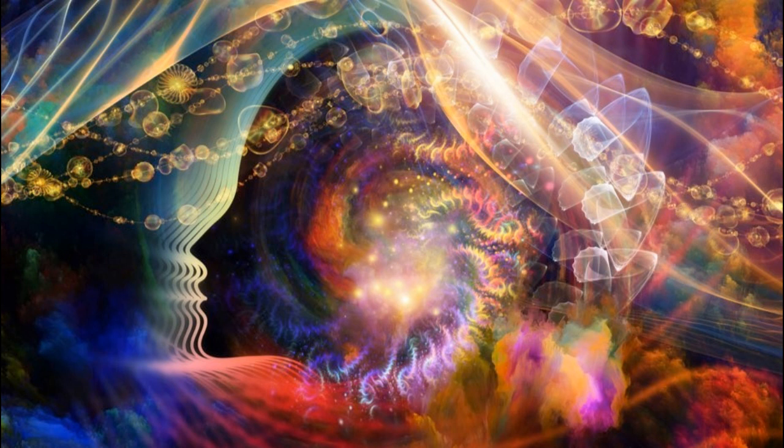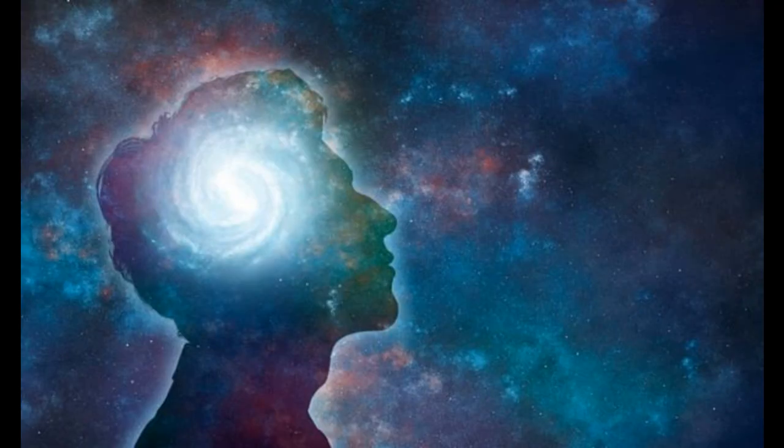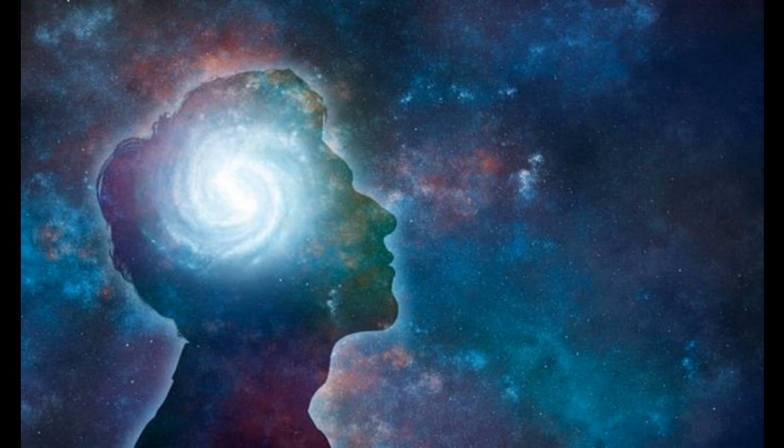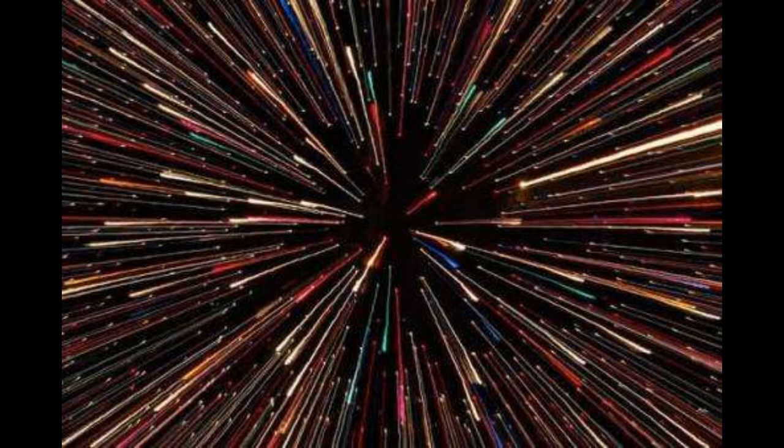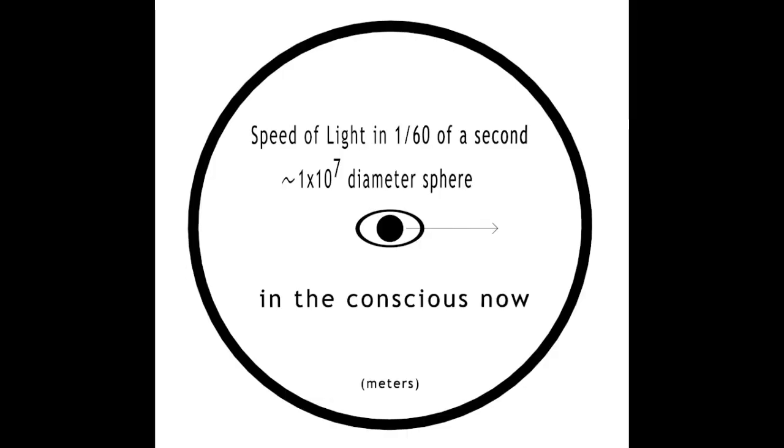Let's first examine our physical manifestation in the fifth dimensional vortex. Perception is based off frame rate, and the human brain takes a picture of reality roughly 60 times in a second. The speed of light is approximately 3 times 10 to the 8 meters per second. This means that light from your physical body travels 5 times 10 to the 6 meters per conscious snapshot. Let's call this the radius of the conscious now.